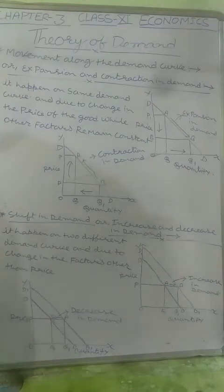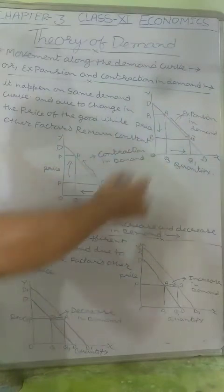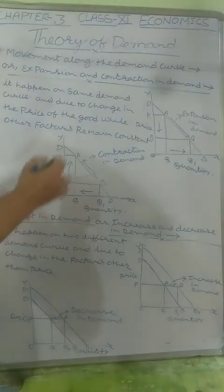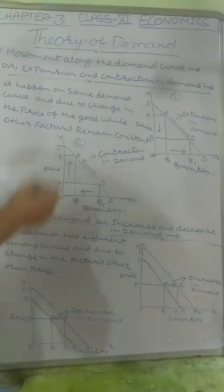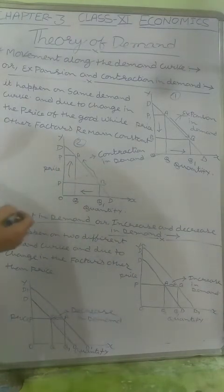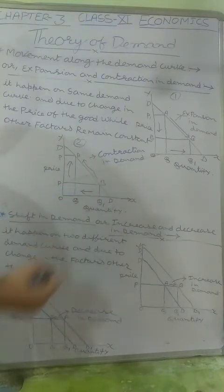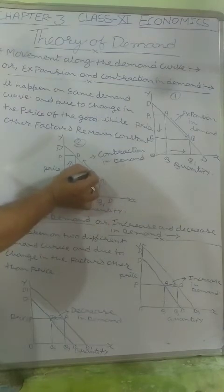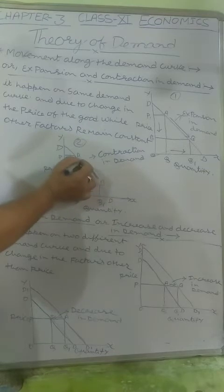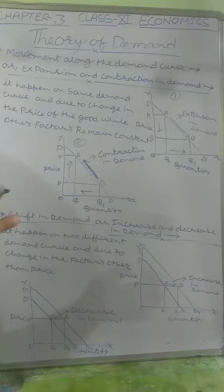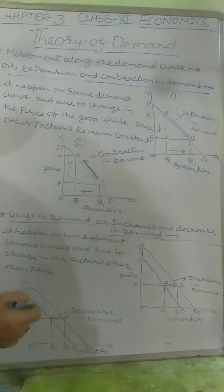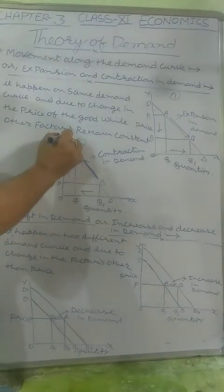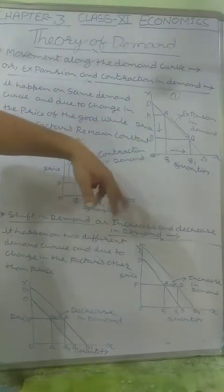All other factors — like the income of the consumer, price of substitute goods, fashion, trend, and habit — all remain constant. That is known as expansion in demand. In the other case — contraction in demand — there is an increase in price, and due to that increase in price the consumer's demanded quantity gets shrunk from OQ1 to OQ. The consumer moves upward from B to A on the demand curve, and this reduction in quantity demanded is called contraction in demand.